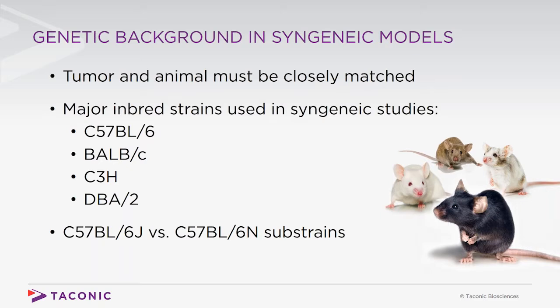There are often questions about substrain differences and how these affect tumor take rates and growth. Perhaps the most well-studied substrain difference is between the B6J and B6N substrains. These mice are genetically similar and are actually well-matched with respect to major and minor histocompatibility loci. Therefore, the transplantation of cells or tissues from any B6 substrain will be tolerated in any other B6 substrain.